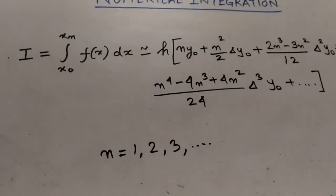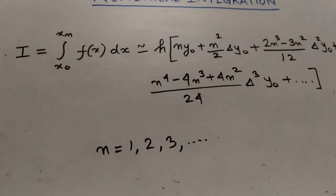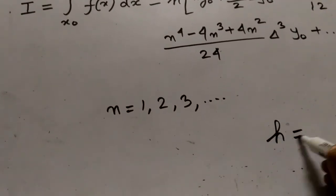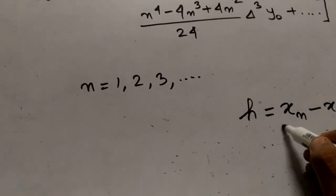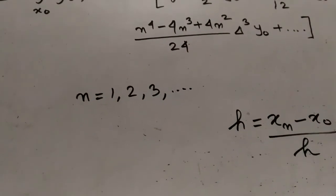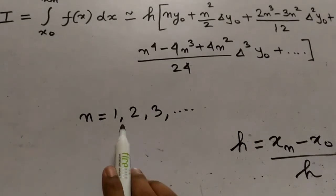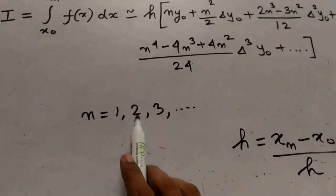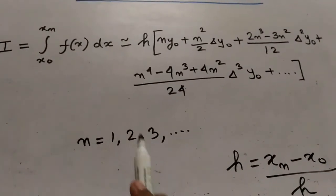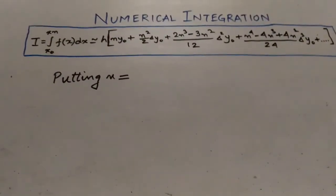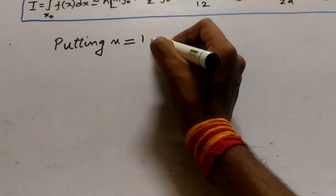The values of n can be 1, 2, 3, and so on, depending on our requirements. The value of h is equal to xn minus x0, divided by n. The various values of n give us various formulas or rules for solving numerical integrals.